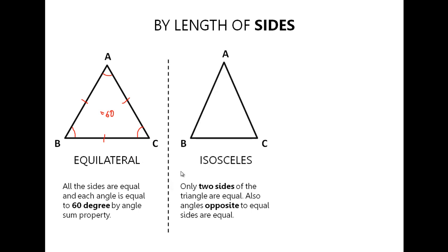The next triangle is the isosceles triangle. In an isosceles triangle, only two sides and two angles are equal. In this triangle, side AB and side AC are equal to each other. Since these sides are equal, the angles opposite to these sides must be equal as well, so angle B is equal to angle C.